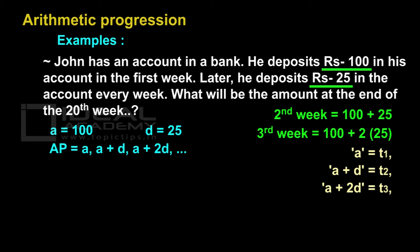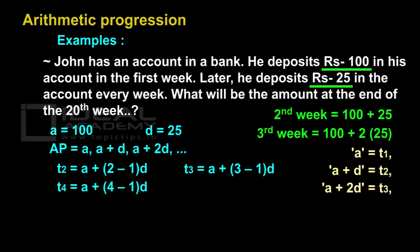We will take the first term as t1, that is a; a plus d as t2; third term a plus 2d as t3, and so on. t2 is equal to a plus (2 minus 1)d. The third term t3 is equal to a plus (3 minus 1) into d. The fourth term t4 is equal to a plus (4 minus 1) into d. The amount at the 20th week, that is t20, is equal to a plus (20 minus 1) into d.